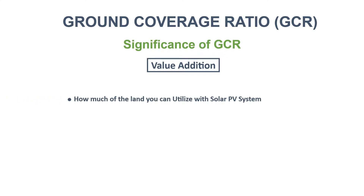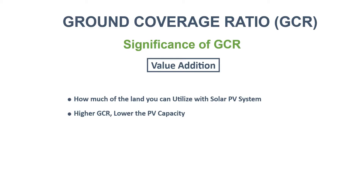So what does GCR signify while designing a solar PV system? The first and very evident point is that it tells you the percentage of an area you can utilize with a solar PV installation. Second, higher the GCR value, lower will be the PV capacity when the tilt, azimuth, and total area is constant.